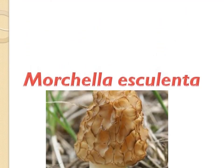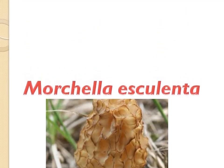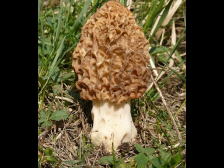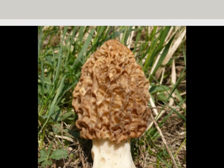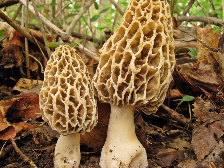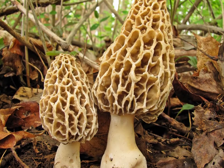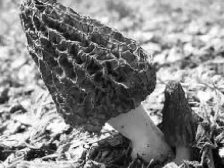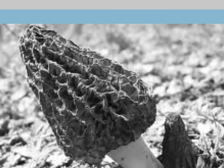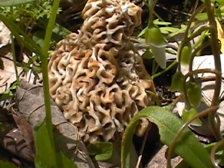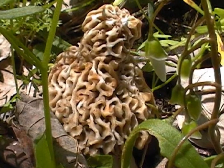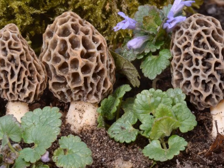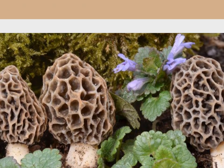Morchella esculenta is commonly known by various names. Some of these names are common morel, yellow morel, true morel, morel mushroom, and sponge morel. The specific epithet comes from the Latin 'esculenta,' meaning edible. The generic name Morchella is said to come from 'morchel,' an old German word meaning mushroom, while the specific epithet 'esculenta' simply means edible.